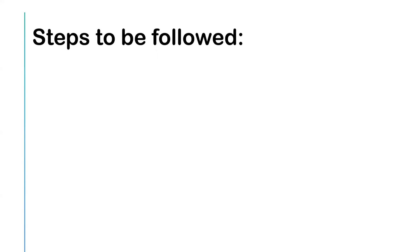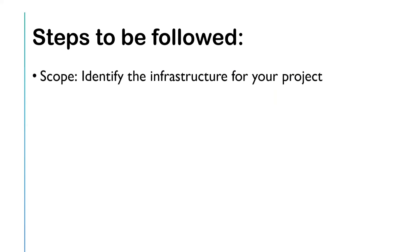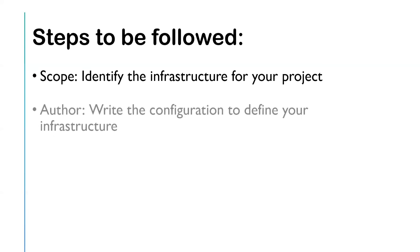Now let's look at the steps we need to follow to configure infrastructure with Terraform. The first step is to identify the infrastructure of your project. For example, if you want to create a VPC along with some subnets and an EC2 instance, you first identify what you need to create — VPC, subnets, then EC2. Identification of the infrastructure is an important first step.